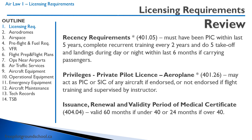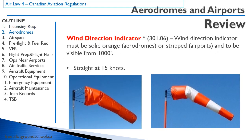A pilot license is kept valid by a medical certificate with a validity period of 60 months — five years — for a pilot under 40 years of age, or 24 months — two years — if the pilot is over 40 years of age. Aerodromes must have a wind sock or wind direction indicator. On a registered aerodrome it is orange; on a certified aerodrome it is striped. The wind sock is straight at 15 knots.